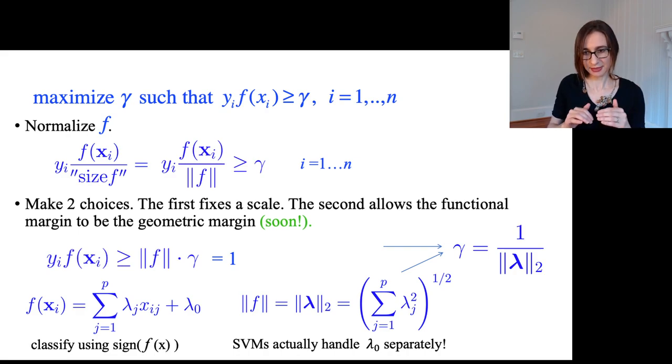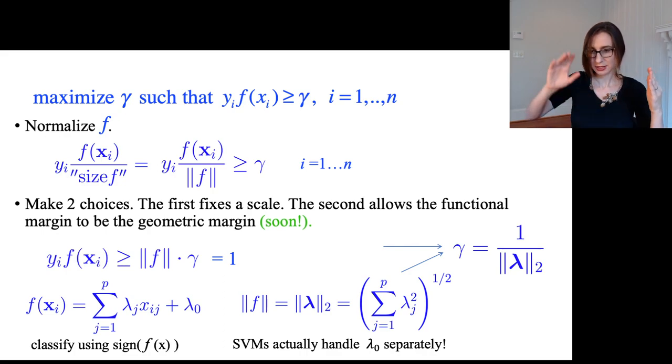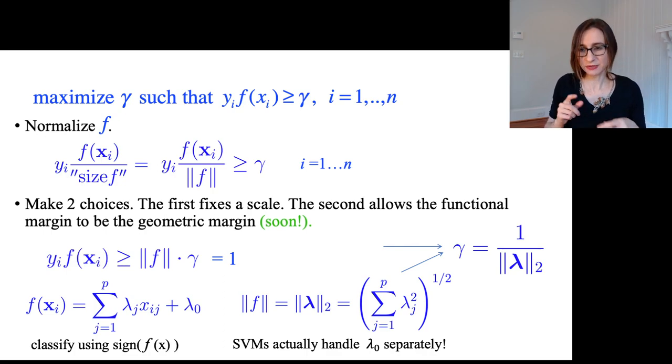These two choices taken together mean that gamma is now equal to 1 over the L2 norm of the lambdas. Now, if you think about gamma being a margin, and you think about lambda being a slope, because obviously in one dimension it is the slope, then you should know here that the margin is inversely related to the slope. So margin, and then the slope is one over that. So that intuition is actually very helpful, and I will go into that more in the next slide, because it all becomes much clearer in one dimension. So I'm going to talk a lot about one dimension.